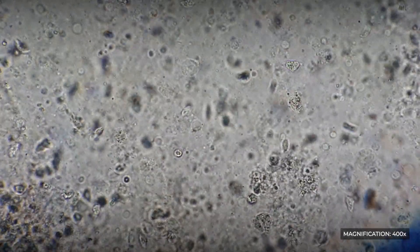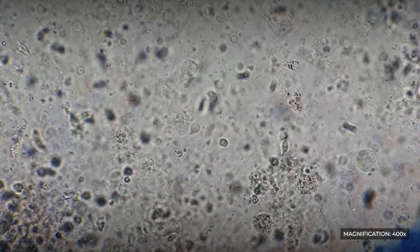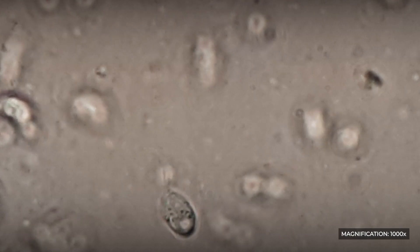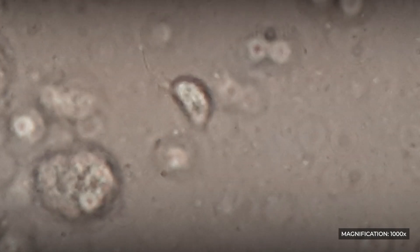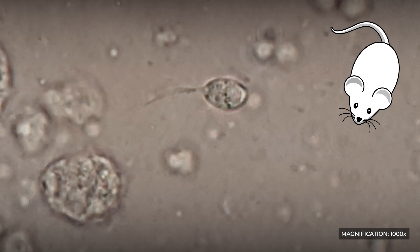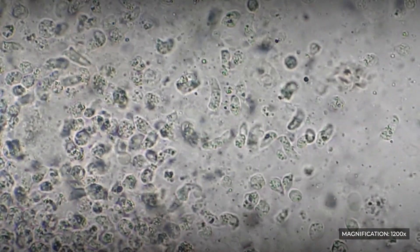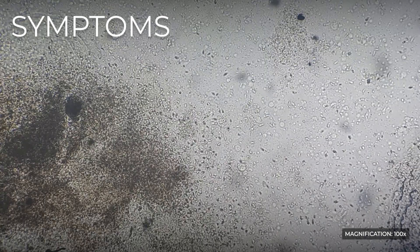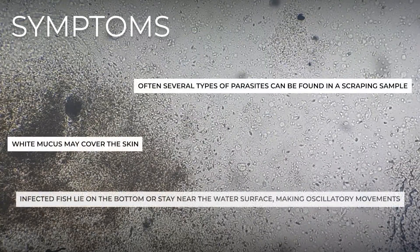At high magnification, the difference between Ihtiobodo and Cryptobia is visible. Cryptobia have a slightly elongated shape and full body with a pointed nose, resembling mice with tails, and the parasites themselves are very pliable. The symptoms that fish exhibit are similar to those of infection with Ihtiobodo nicator.